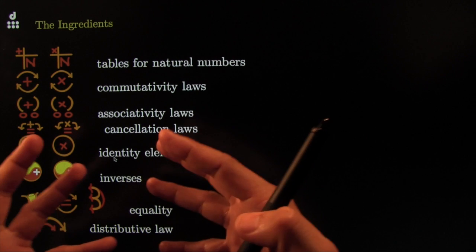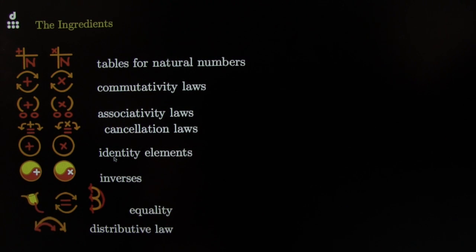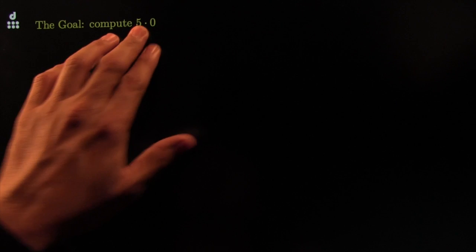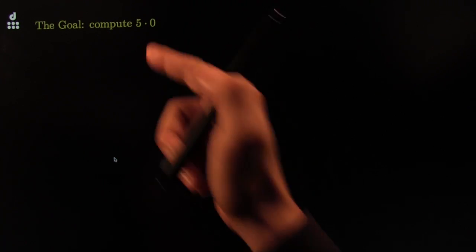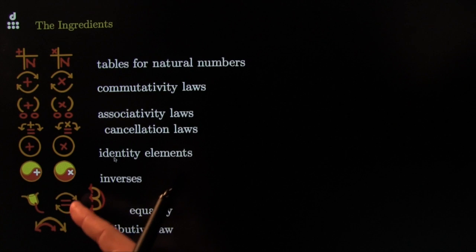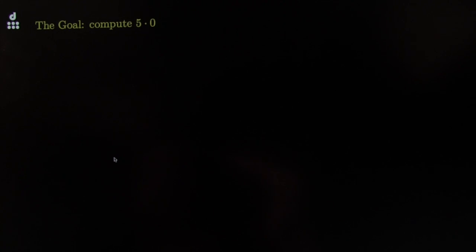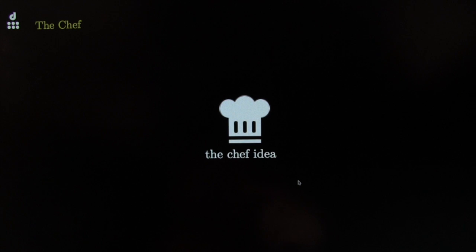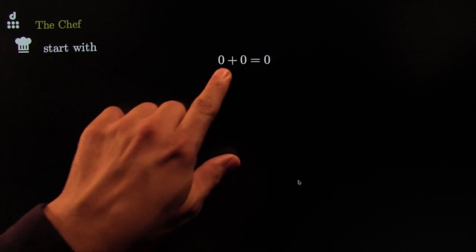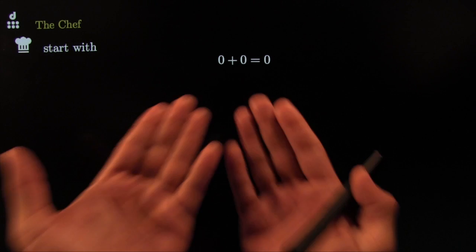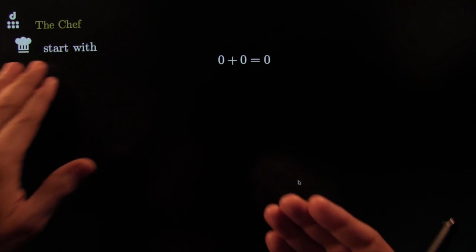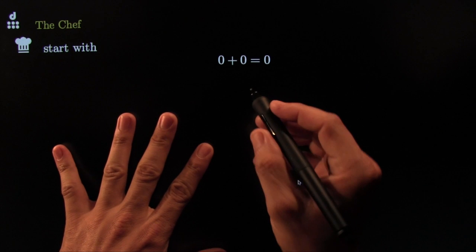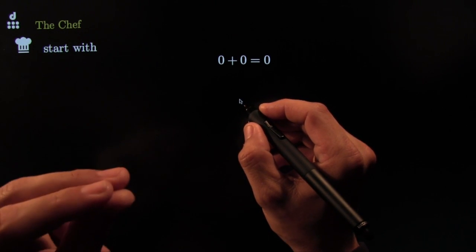These are the ingredients with which you can cook anything you want — you are the chef. The goal is to compute five times zero. These are the ingredients; that is the goal. We need a chef idea to get us there. The chef idea comes like this: start with zero plus zero equals zero. Who would have thought that's where to start? That's amazing — a chef didn't look it up in a recipe, they just chef'd it. That's why it's so nice to be human — we have the capacity to start with something like that.